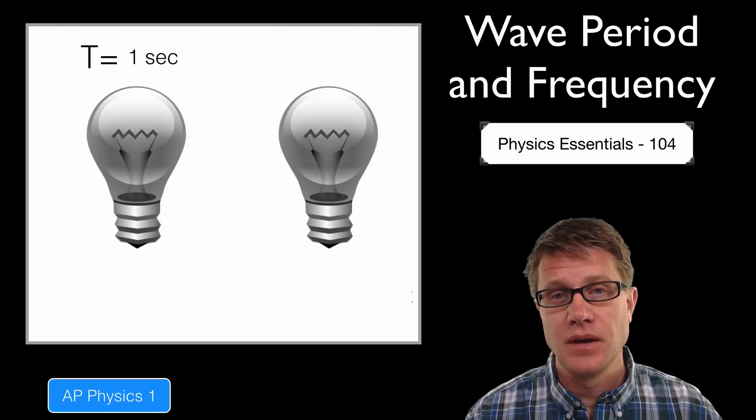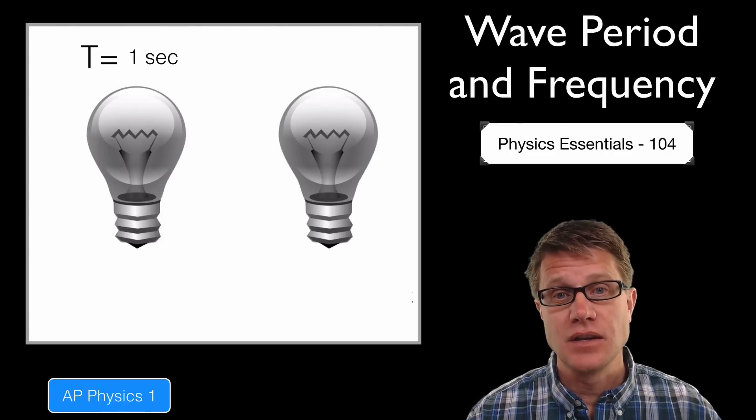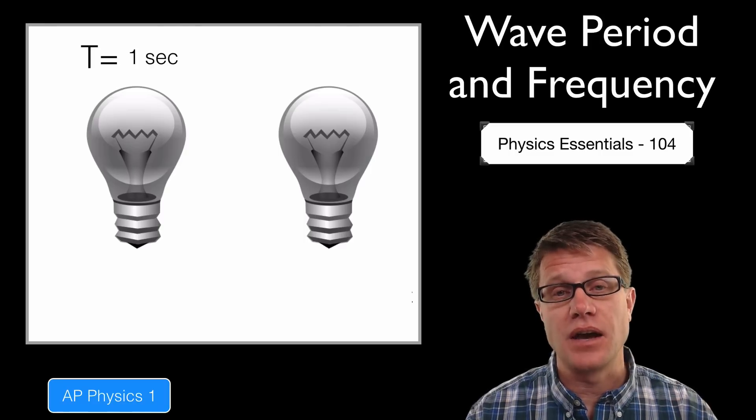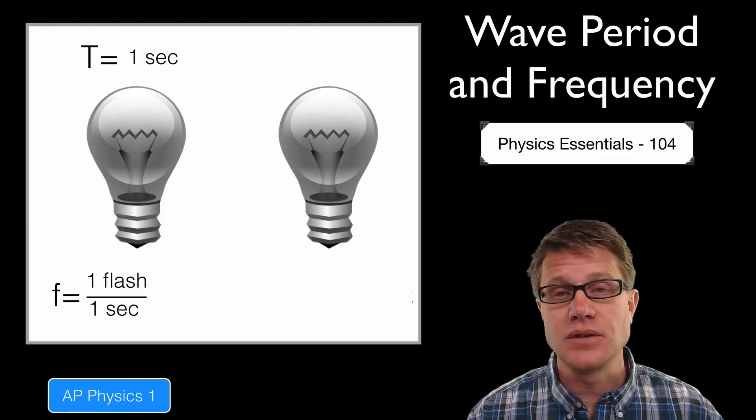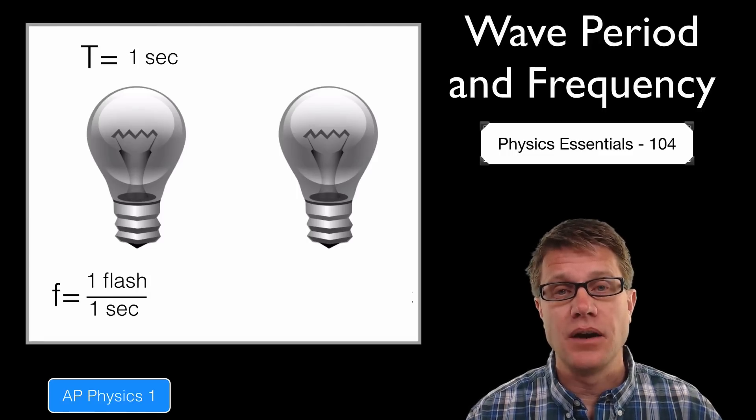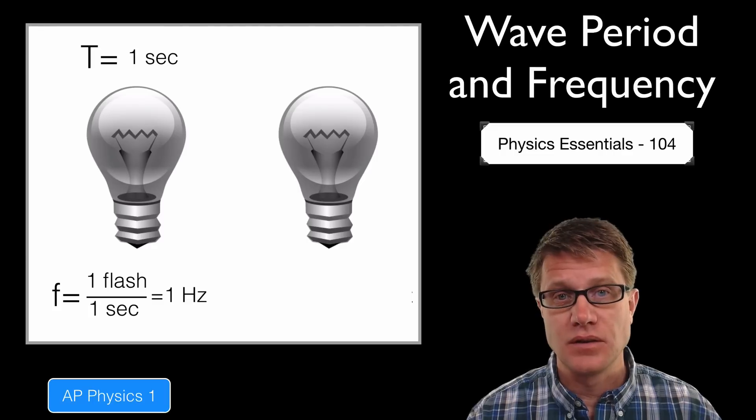What's the frequency then? Well, it's how many flashes we have per second. Since we have one flash every second, our frequency is one flash per one second. Now the units for that is going to be in hertz, and so our frequency is one hertz.